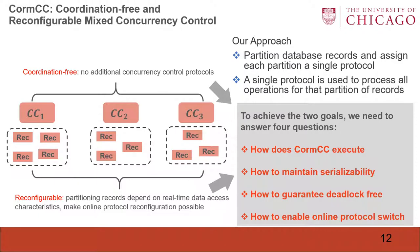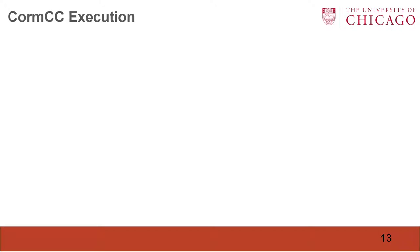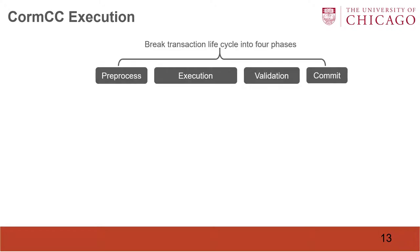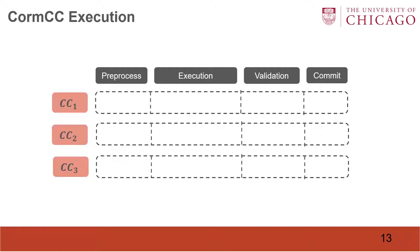To achieve the two goals, we need to answer four questions: how does COMCC execute, how to maintain serializability, how to guarantee deadlock-free, and how to enable online protocol switch? We break a transaction's lifecycle into four phases: preprocess, execution, validation, and commit. We find most protocols can fit into this four-phase model. If one protocol does not have a specific phase, we just introduce a no-op function.